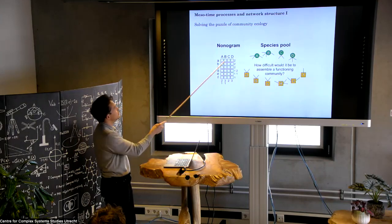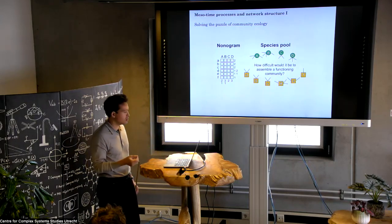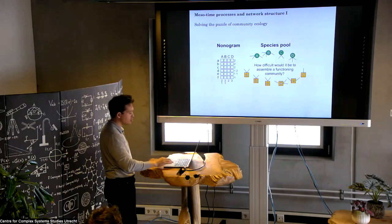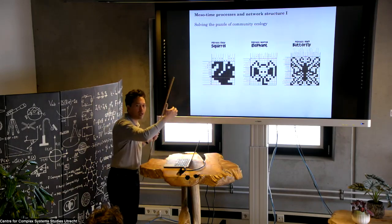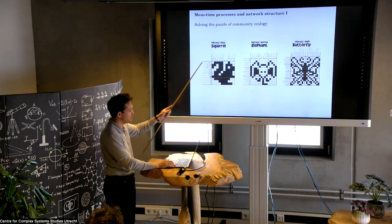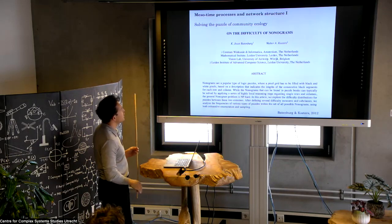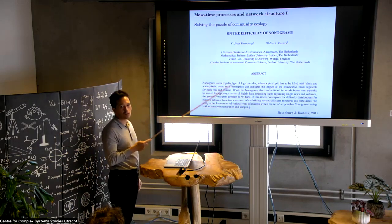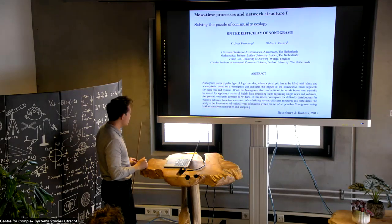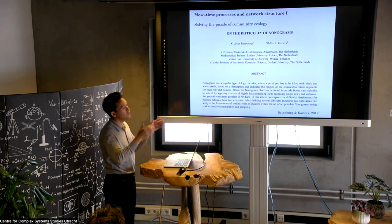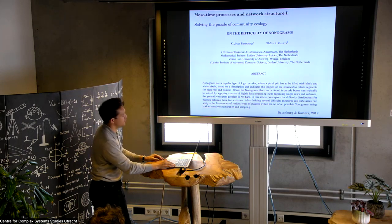Once you've rewritten your system as a nonogram, you can ask: how difficult would it be to assemble a functioning community? There's a whole body of work in computer science formally assessing how difficult a nonogram is to solve algorithmically — some great work done here in the Netherlands. We've extended this idea for our own purposes: our general workflow is to take an ecological network, most likely a host-parasitoid network, convert it into a nonogram puzzle, calculate its difficulty using systematic algorithms, and then correlate difficulty with various network properties and metadata.